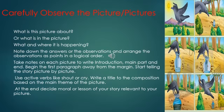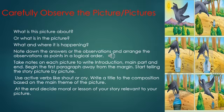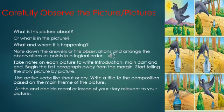My dear students, let us now learn the procedure of writing a picture-based story. Before you start, carefully observe your picture and ask yourself: What is this picture about? What is in the picture? What and where is it happening? Note down your observations and arrange them as points in a logical order. Take notes on each picture to write the introduction, main part, and end. Begin the first paragraph away from the margin. Start telling the story picture by picture. Use active verbs like 'shout' or 'cry.' Write a title based on the main theme of the picture. At the end, add a moral or lesson relevant to your picture.